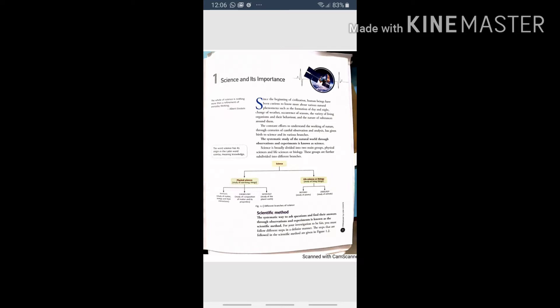The systematic study of the natural world through observations and experiments is known as science. Science is broadly divided into two main groups: physical sciences and life sciences or biology. These groups are further subdivided into different branches.